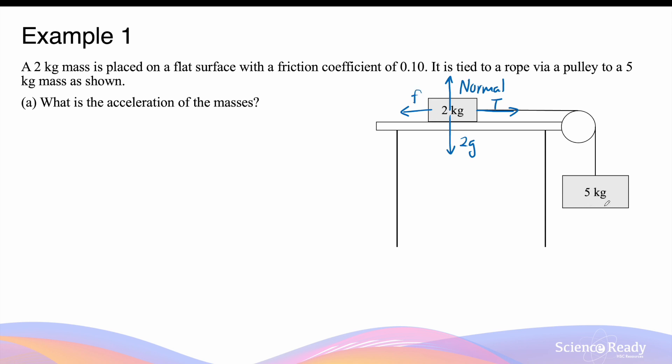For the 5kg mass, we have its weight force, 5g, directed downward, and we also have the tension going up due to the rope.